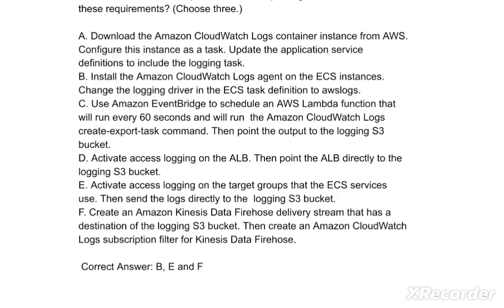Change the logging driver in the ECS task definition to AWS Logs. Option C: Use Amazon EventBridge to schedule an AWS Lambda function that will run every 60 seconds and run the Amazon CloudWatch Logs create export task command, then point the output to the logging S3 bucket. Option D: Activate access logging on the ALB, then point the ALB directly to the logging S3 bucket.